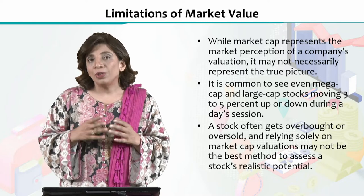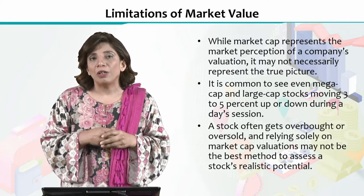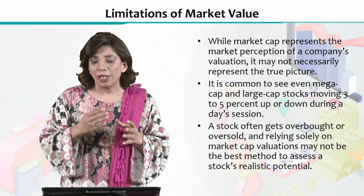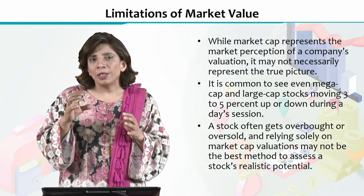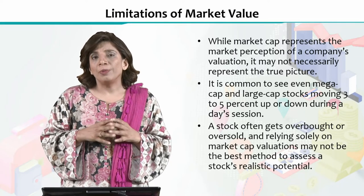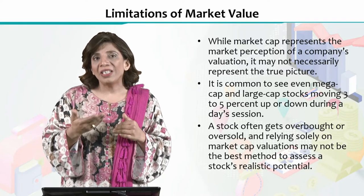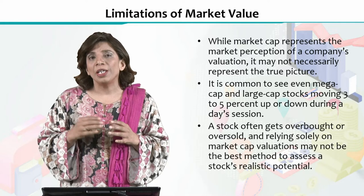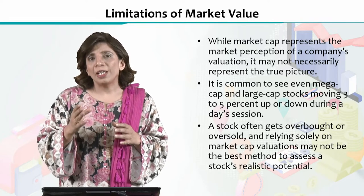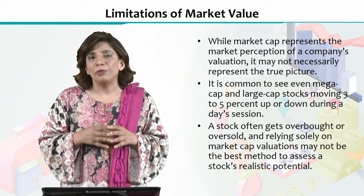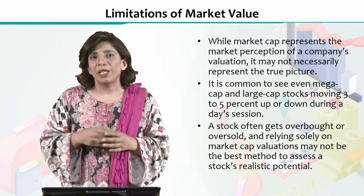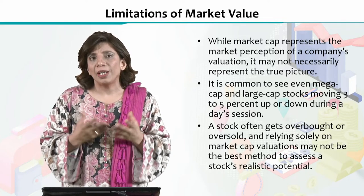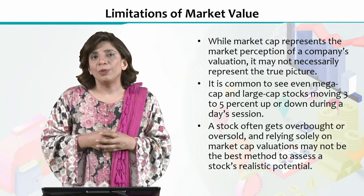Market value also has some limitations. For example, when we account for market capitalization and look at a particular company's share price movements in the stock market, there may be some abnormal market activity. There is a concept called the herding effect: a credible person says they foresee a company prospering and invests heavily in it, and then many others follow suit, all buying that company's shares. Due to increased demand, the price escalates — but that doesn't necessarily mean the company's overall financial position has genuinely improved.